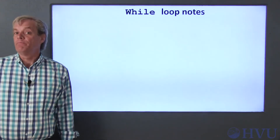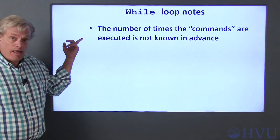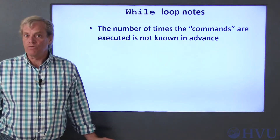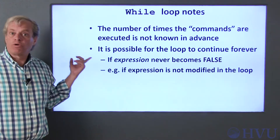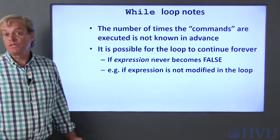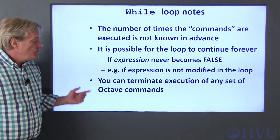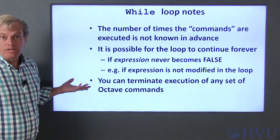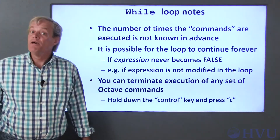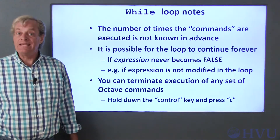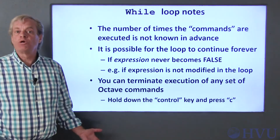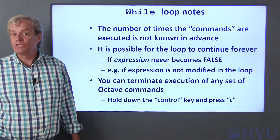There are a few notes about while loops. First, unlike for loops, you generally don't know ahead of time how many times the loop is going to execute. In fact, it's possible for a while loop to never end. If the expression in the while statement never becomes false, the loop has no way to terminate. You can terminate execution of Octave commands manually by holding down the control key and pressing C. This tells Octave to stop and return control to the command prompt.